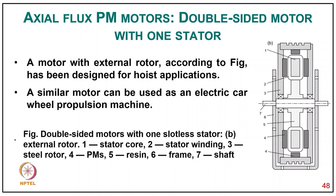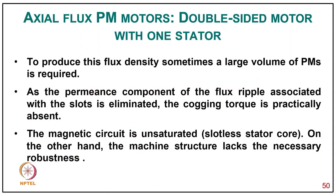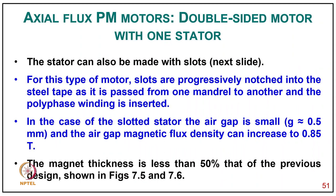Additionally, magnets on the cylindrical parts of the rotor are sometimes added — U-shape magnets that embrace the armature winding from three sides — and only the end portion of the winding does not produce any electromagnetic torque. Due to the large air gap, the magnetic flux density does not exceed 0.65 T; to produce this flux density, a large volume of permanent magnet material is required. Since the slotless stator core eliminates the slot permeance coefficient, the cogging torque is practically absent. However, the machine structure lacks the necessary robustness. The stator can also be made with slots, where slots are progressively notched into the steel tape as it passes from one metal-working step to another.